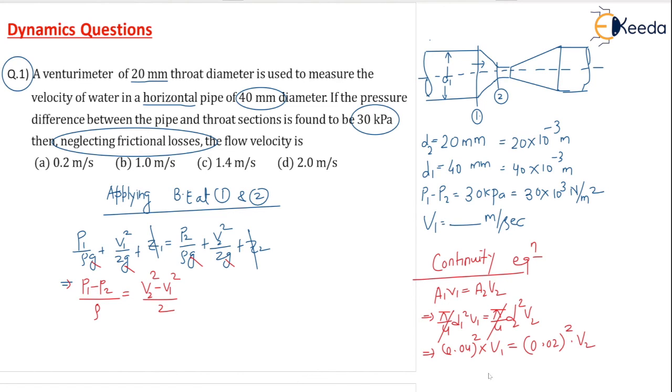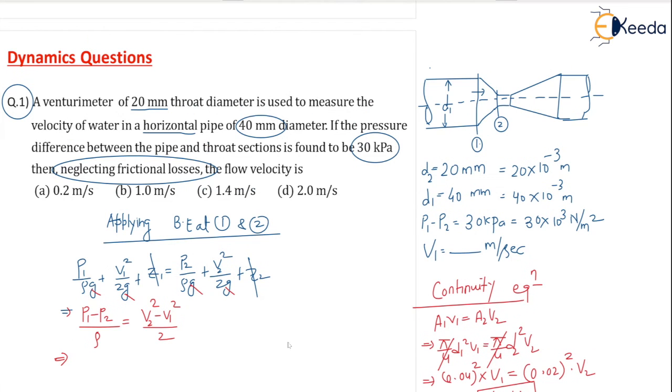So I can write here V2 in terms of V1: 4V1 we are getting out of this equation. Here V2 = 4V1. Now, same thing we will substitute it here in this equation. We got V2 = 4V1.